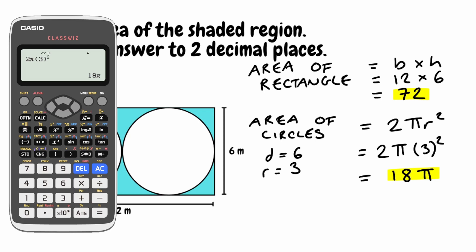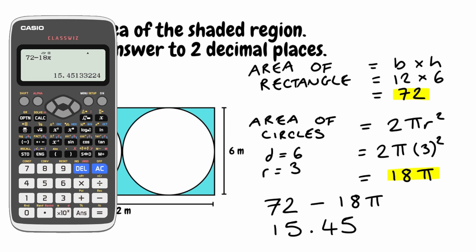To figure out the area of the shaded region we take the area of the rectangle — which is 72 — and take away the area of the two circles — which is 18 pi. Typing 72 take away 18 pi into the calculator gives us 15.45133224, and because the question wanted our answer to two decimal places that rounds to 15.45. Our lengths were given in metres so the area is in metres squared. Our final answer for the shaded region is 15.45 metres squared.